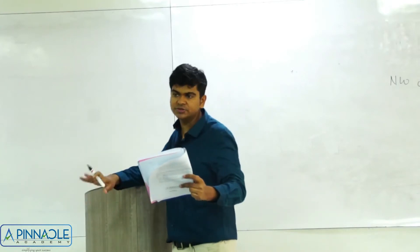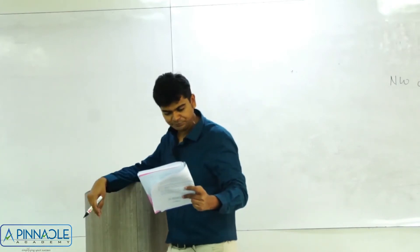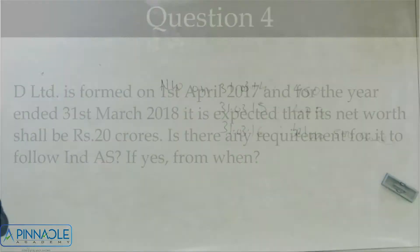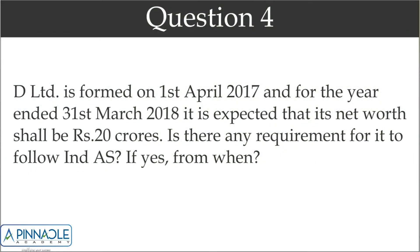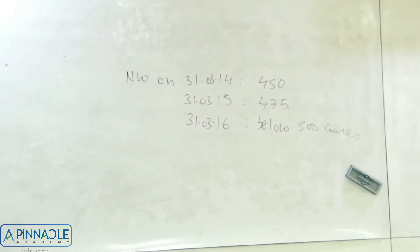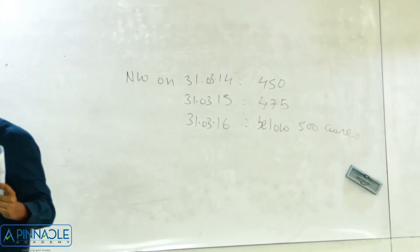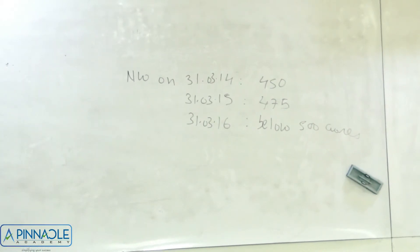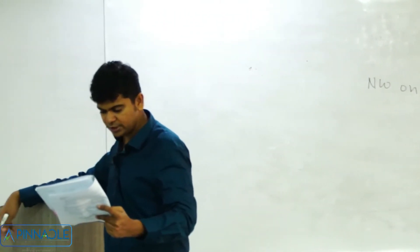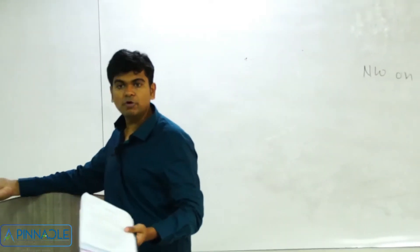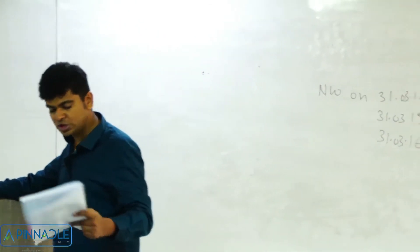Assuming the company is listed, C Limited will have to start following Ind AS from 1st April 2017. For D Limited, formed on 1st April 2017, if it is a listed company, it will have to start following Ind AS from 1st April 2017 itself.